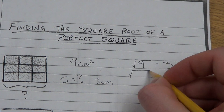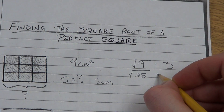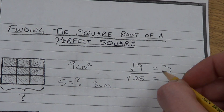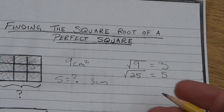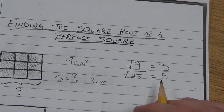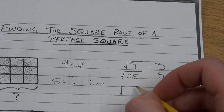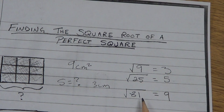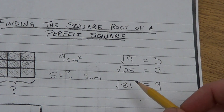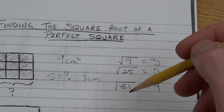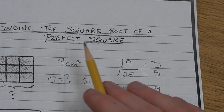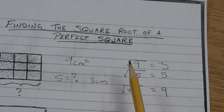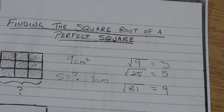Another example: the square root of 25. I'm asking what number times itself equals 25. The answer is 5, because 5 times 5 equals 25. So the square root of 25 equals 5. The square root of 81 equals 9 because 9 times 9 is 81. So the square root means: what number times itself will equal this number? Now 81, 25, and 9 are all perfect squares, but not all numbers are perfect squares. We're just going to look at finding the square roots of numbers that are perfect squares.